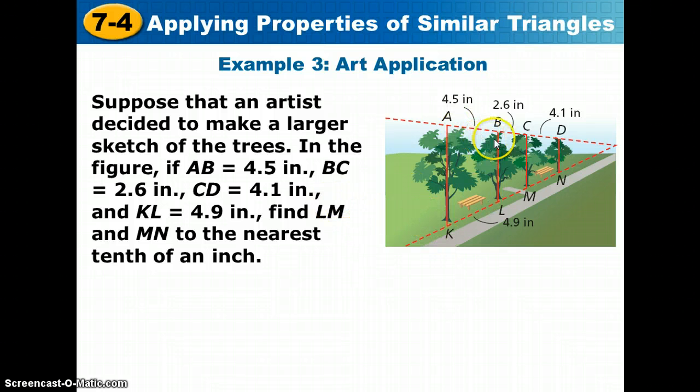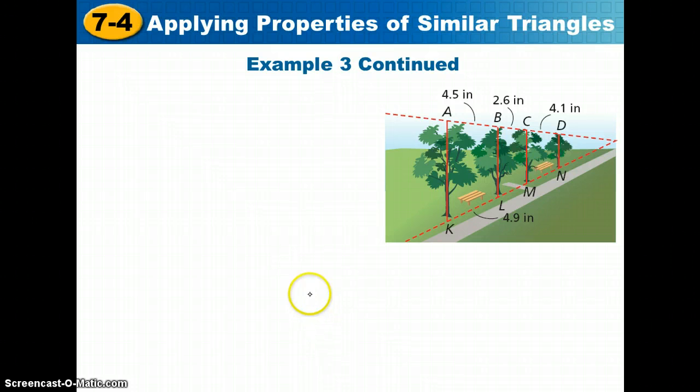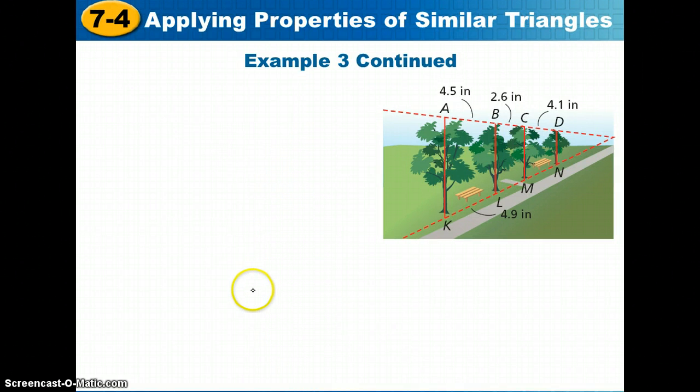So in this figure, AB is 4.5 inches, BC is 2.6 inches, CD is 4.1 inches, and KL is 4.9 inches. We can use proportions to find LM and MN. First, let's find, we can set up the following proportion based on this given information.